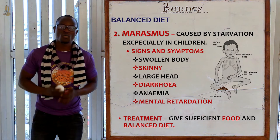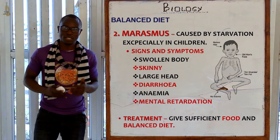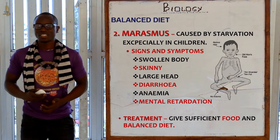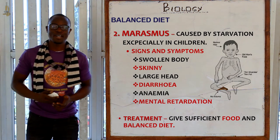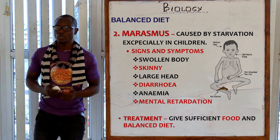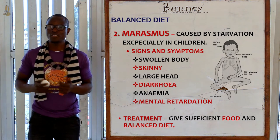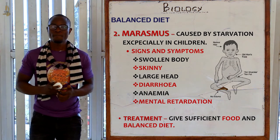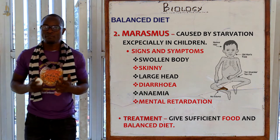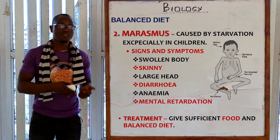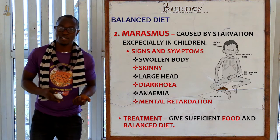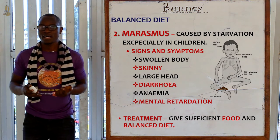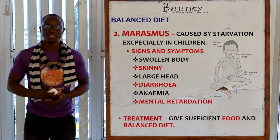The treatment for marasmus is to give sufficient food and a balanced diet to the affected people, because the main reason they have marasmus in the first place is because they are starving.